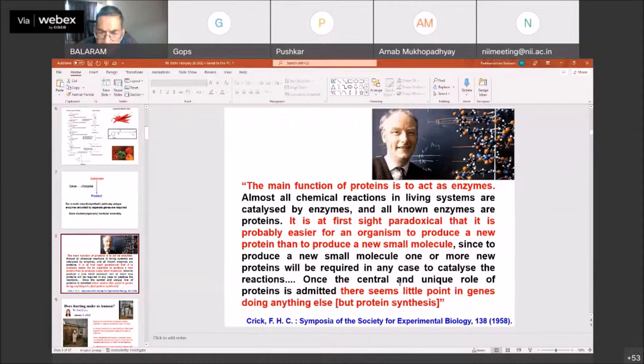Francis Crick, as early as 1958, in the Symposia of the Society for Experimental Biology, wrote a remarkable article. This is before the genetic code was unraveled. Much of what we call molecular biology, the central dogma and so on, is in these pages. Crick says the main function of proteins is to act as enzymes. He adds, it is at first sight paradoxical that it is probably easier for an organism to produce a new protein than to produce a new small molecule. He concludes by saying there seems little point in genes doing anything else but protein synthesis. This is still true.